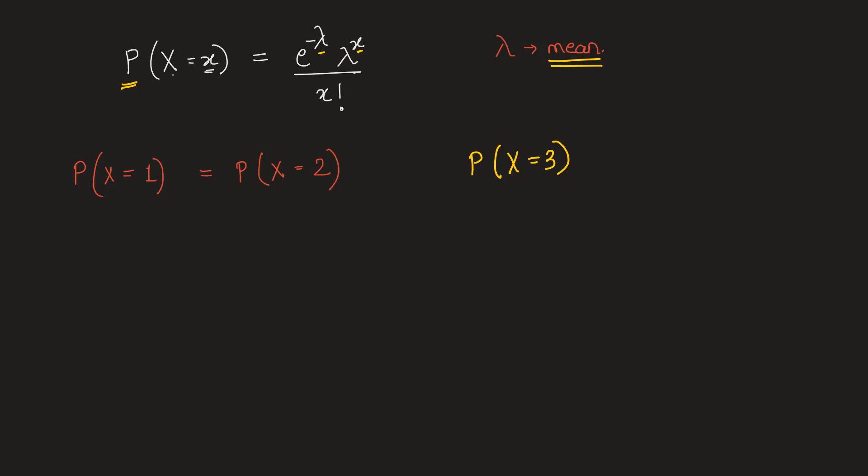On the left hand side, by putting the value of x as 1, we have e to the power minus lambda times lambda to the power 1 upon 1 factorial, which will be equal to e to the power minus lambda times lambda to the power 2 upon 2 factorial.